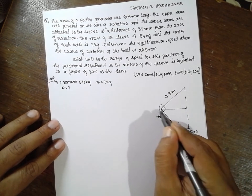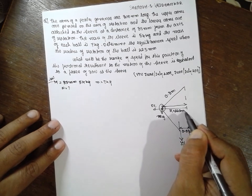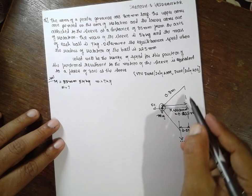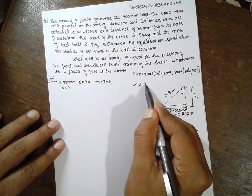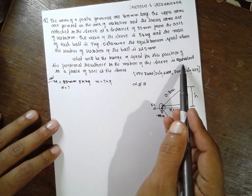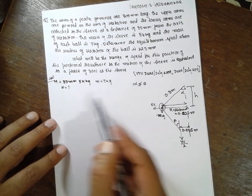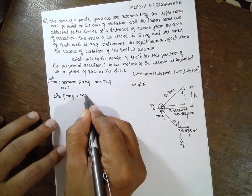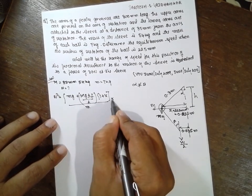The radius R is 225 mm, which is 0.225 meter. Here, alpha and beta are the angles, and alpha is not equal to beta. Now the formula is: N² = [mg + Mg ± F] divided by 2, multiplied by [1 + k] divided by m, multiplied by 91.2 divided by H.